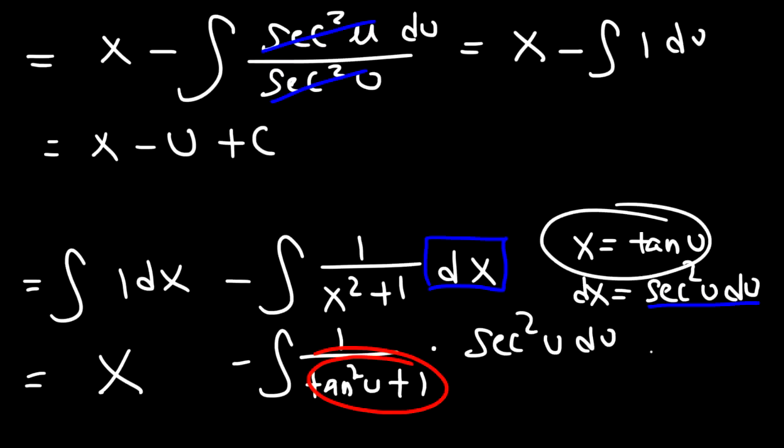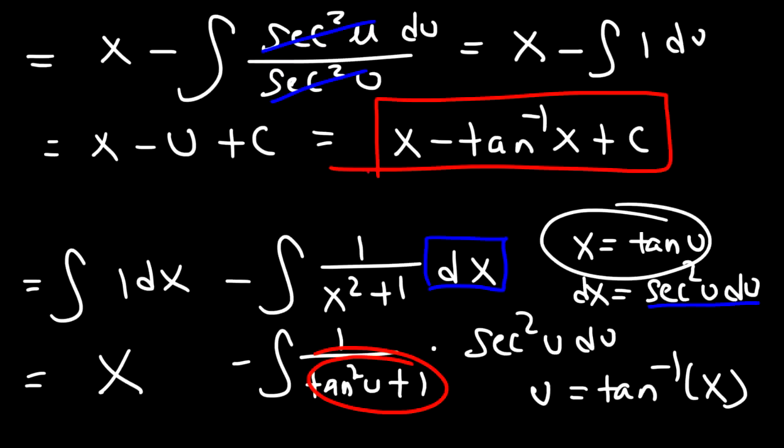Now, if x is equal to tan u, u is going to be the inverse, or the arctangent of x. So the final answer is x minus arctan(x) + c. And that's the integral of x² over x² + 1.